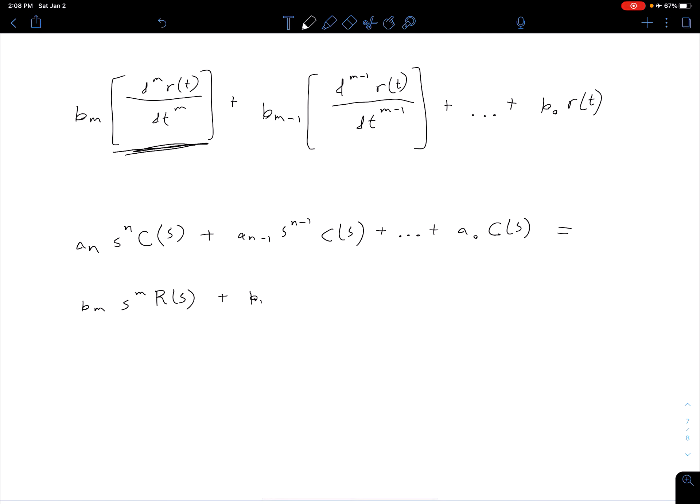Now we have plus b sub m minus 1 times s to the power of m minus 1 times R(s) plus so on and so forth plus b naught times R(s).